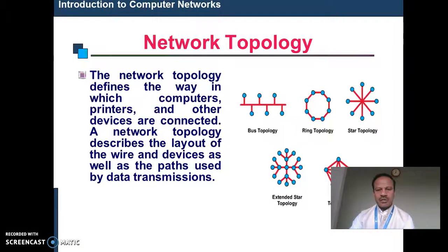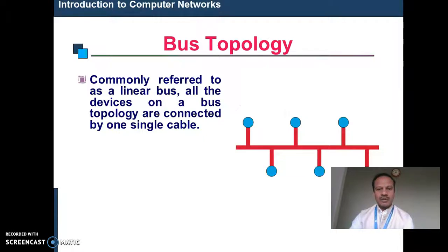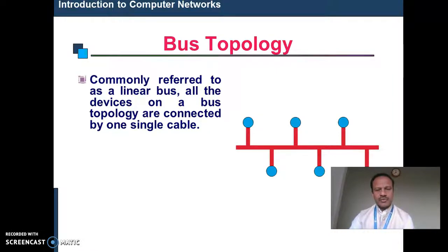Topology refers to the configuration of how computers are arranged in a network. There are several types: bus topology, ring topology, star topology, extended star topology, and mesh topology. In bus topology, the computers are connected through a single cable. This is very simple and can be easily extended.